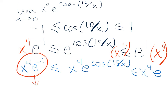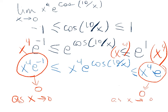As x goes to 0, e to the negative 1 is just a constant number, so x to the 4th times e to the negative 1 goes to 0 to the 4th times e to the negative 1, which is just 0. Similarly, x to the 4th times e goes to 0 as x goes to 0. Therefore, by the squeeze theorem, this middle portion also must go to 0 as x goes to 0. So this limit equals 0 by the squeeze theorem.